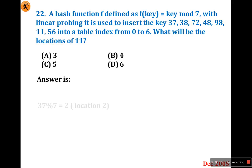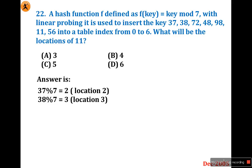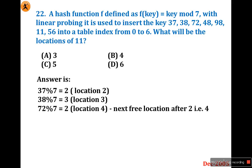First: 37 mod 7 = 2, so 37 goes to location 2. Then 38 mod 7 = 3, going to location 3. Next, 72 mod 7 = 2, but location 2 is already allocated. Location 3 is also allocated, so the next free location is 4. So 72 is allocated to location 4.